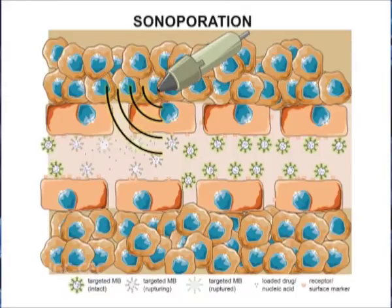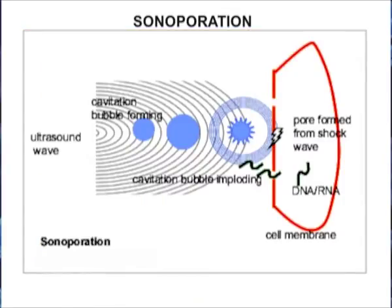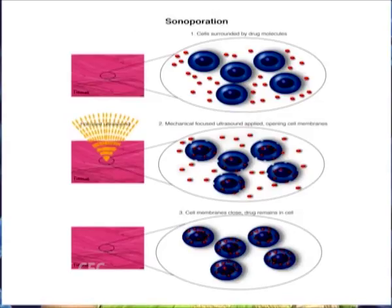Sonoporation makes use of high-frequency sound waves for facilitating translocation of nucleic acids. Application of sound waves leads to the formation of cavitation bubbles; the bubbles near the cell membrane cause perturbations in it, creating pores that induce transient permeabilization. This leads to the movement of DNA or RNA inside the cell by passive diffusion. Sonoporation is also used for in vivo gene therapy procedures. The efficiency of the process depends on the intensity and frequency of the ultrasound waves. A major advantage is that it is a non-invasive procedure that can transfer the gene of interest to internal organs without surgical procedures.